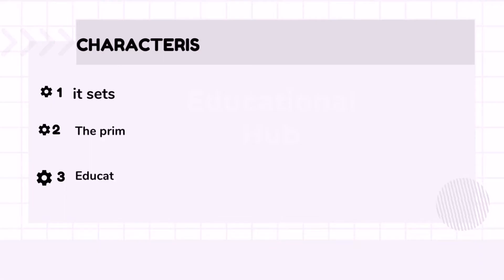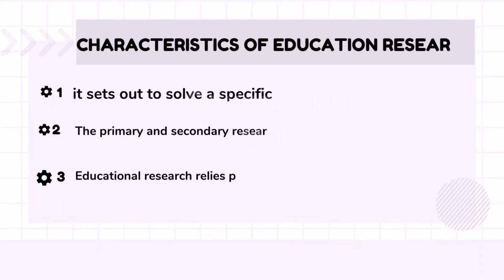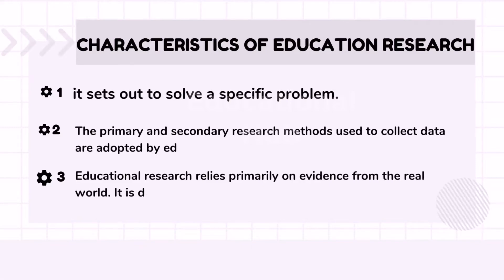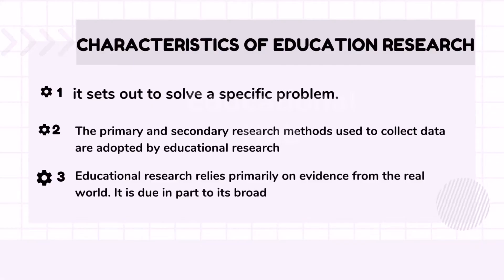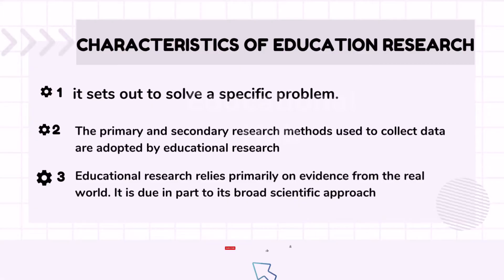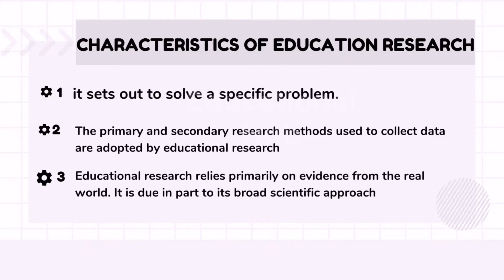Characteristics of educational research. While educational research is subject to a wide variety of forms and approaches, several characteristics define its process and approach. First, it sets out to solve a specific problem. Second, the primary and secondary research methods used to collect data are adopted by educational research. This means that to arrive at the appropriate conclusion in a study on education, an investigator relies not only on his own experience, but also on data from second-hand sources. Third, educational research relies primarily on evidence from the real world, due in part to its broad scientific approach.